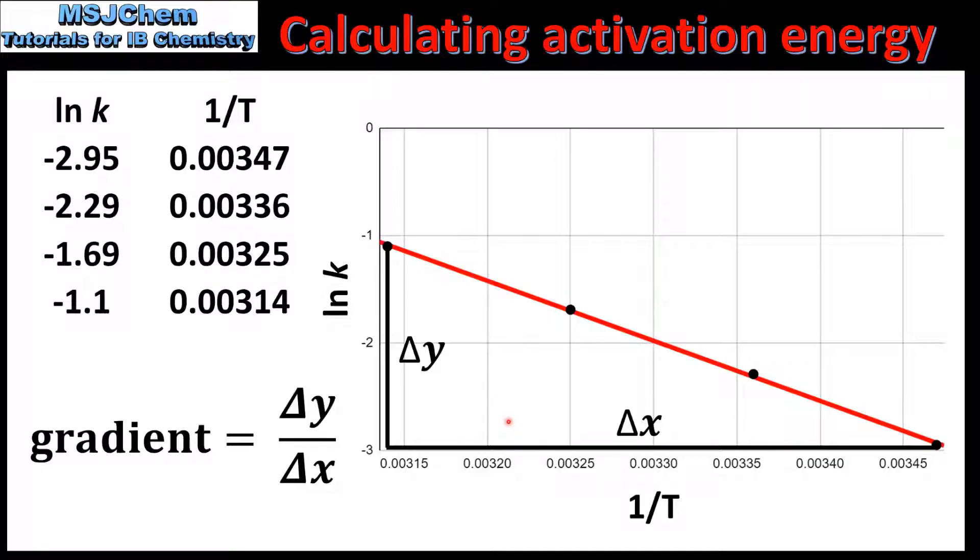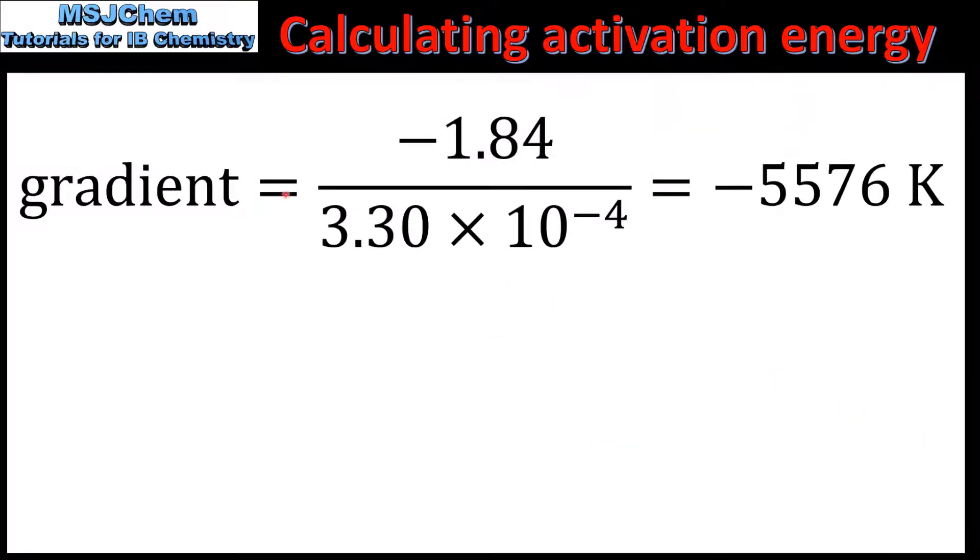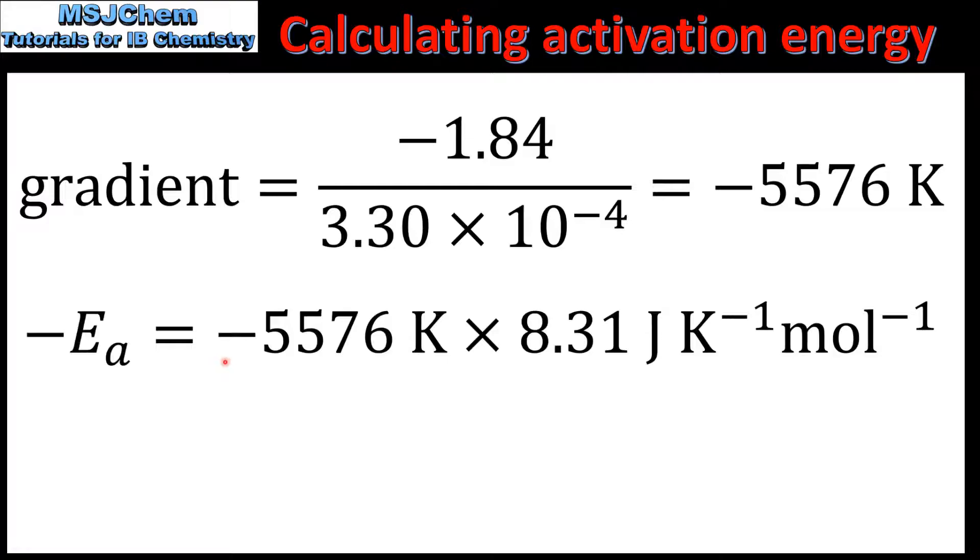Next we'll use these values to calculate the gradient of the line. The gradient of the line is equal to negative 1.84 divided by 3.30 times 10 to the negative 4, which gives us a gradient of negative 5576 Kelvin.